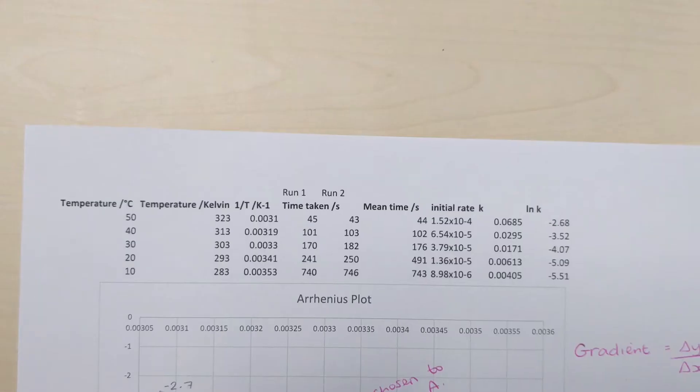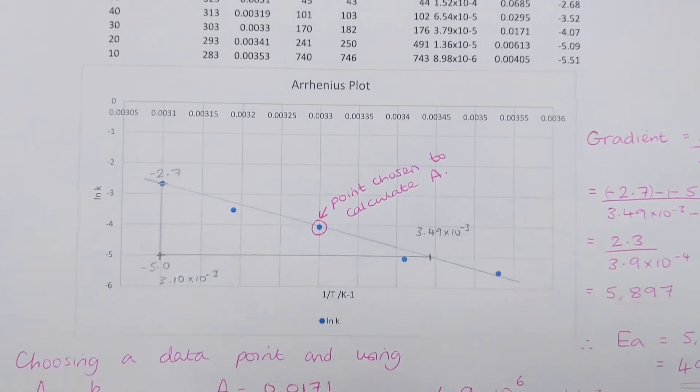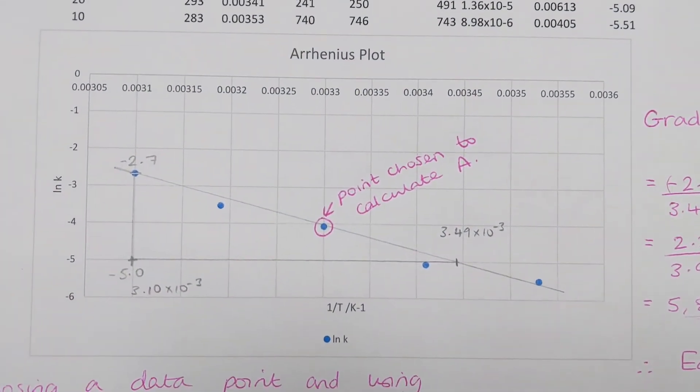We plot ln k versus 1 over T and we do a line of best fit that goes through the points.